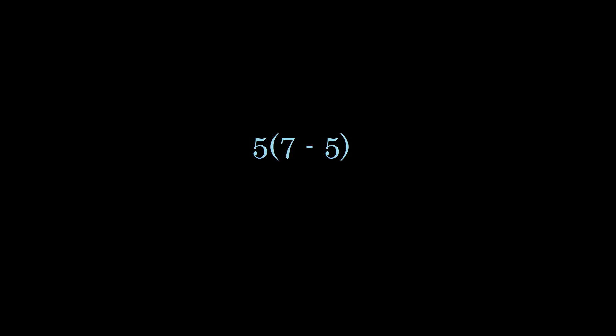It's easiest to show if we replace the numbers with variables. Now we have A parentheses B minus C end parentheses. How do we expand this out? We can't just solve B minus C and multiply A into that because we don't know what B minus C is. But we can still expand this. We can multiply both variables by A and get AB minus AC.